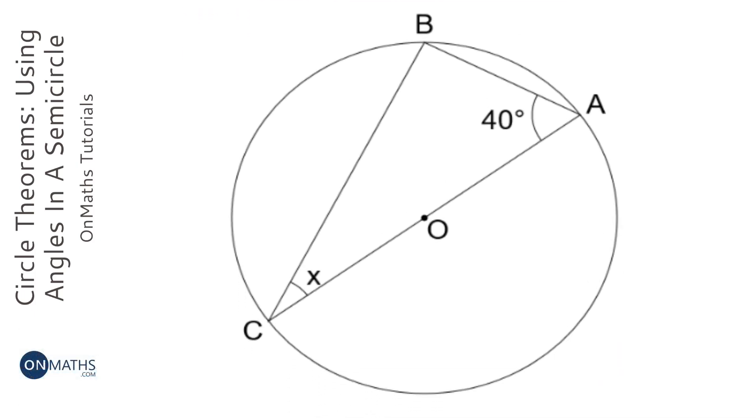OK, so for this circle theorem we need to identify the fact that we have a diameter, which is this one here, and any angle coming from a diameter is going to be 90 degrees there.